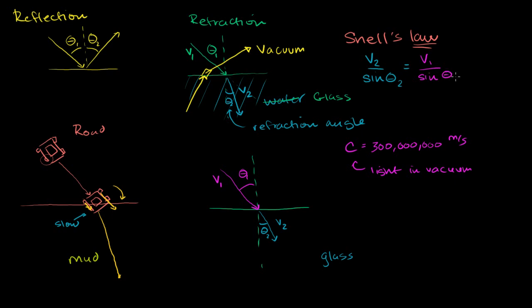Snell's Law tells us that the ratio of V2 to the sine of the angle of refraction — remember SOHCAHTOA, basic trig — is equal to the ratio of V1 to the sine of the angle of incidence, sine of theta 1. We're going to apply this in the next couple of videos, but there are many ways to view Snell's Law. You may or may not be familiar with the idea of an index of refraction.